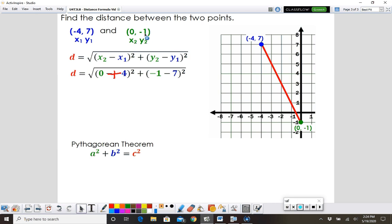Then we're going to do y2 minus y1, which is going to be negative 1 minus 7. So we've got 0 plus 4, which is 4. Negative 1 minus 7 gives me negative 8.